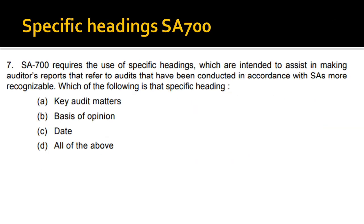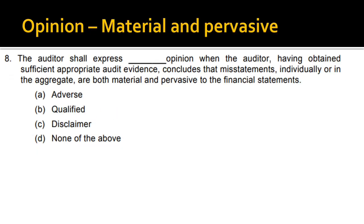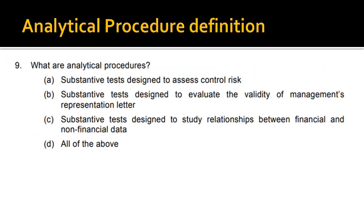Next: SA 700 requires the use of specific headings. SA 700 says that when you are reporting on the audit, you need to define certain headings in your audit report, which includes key audit matters, basis of opinion, and date. Therefore, option D — all of the above — is the correct answer.